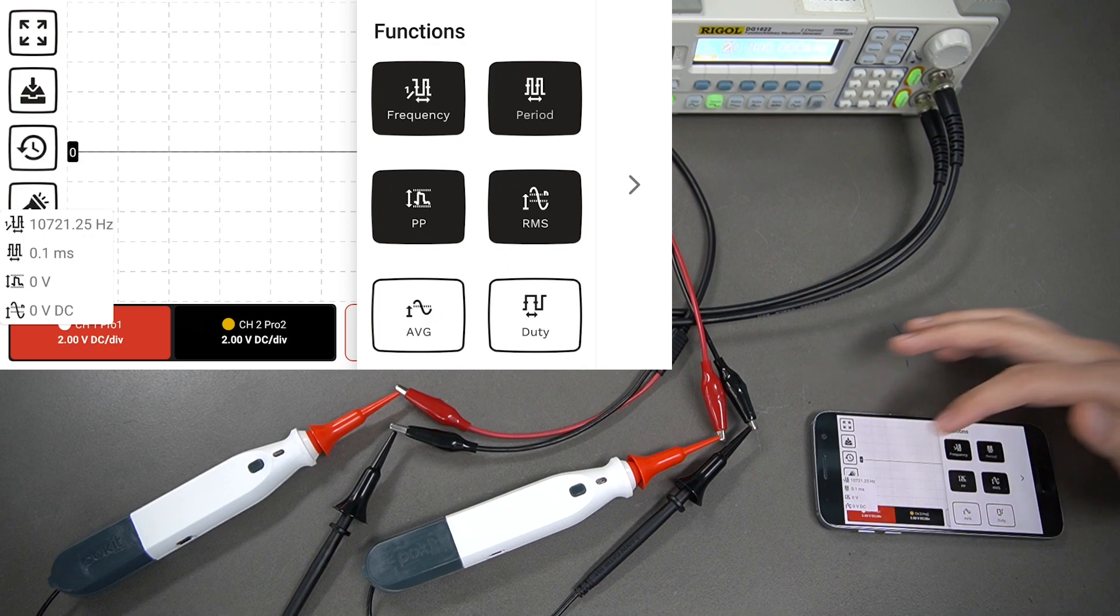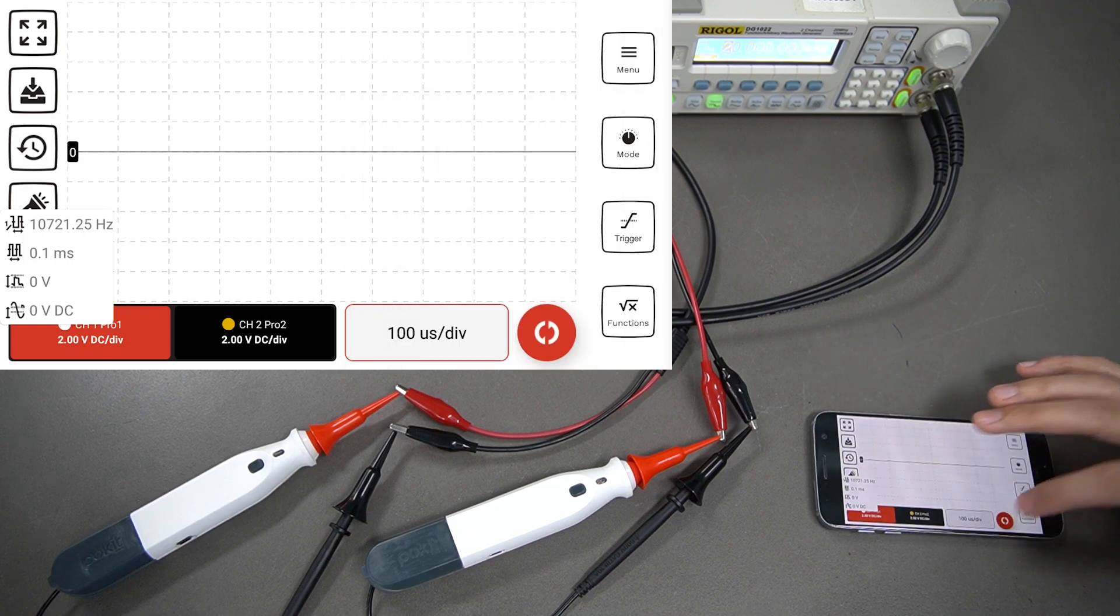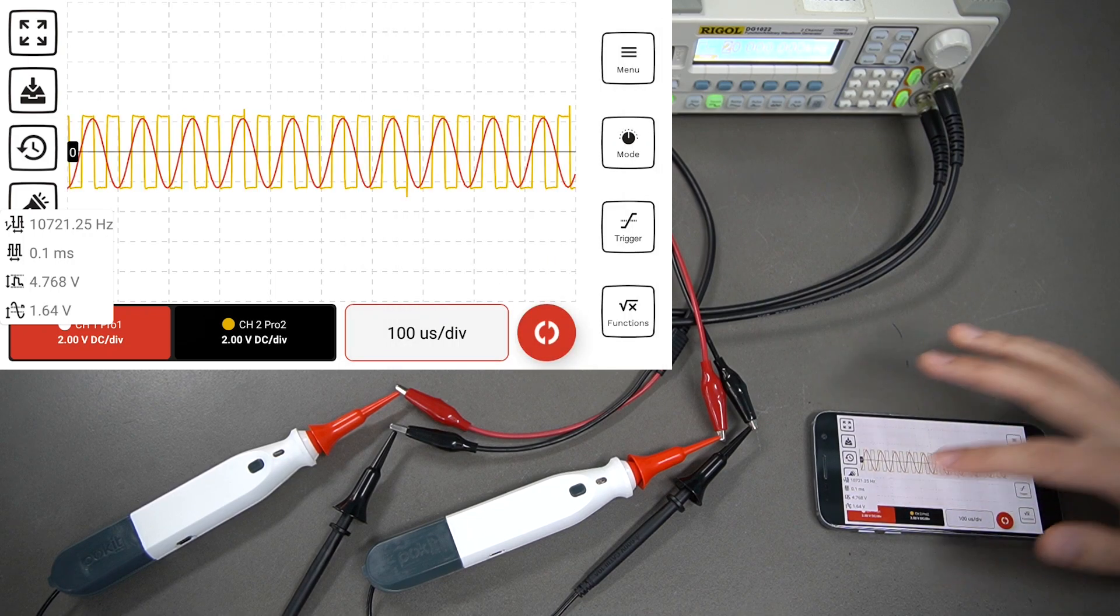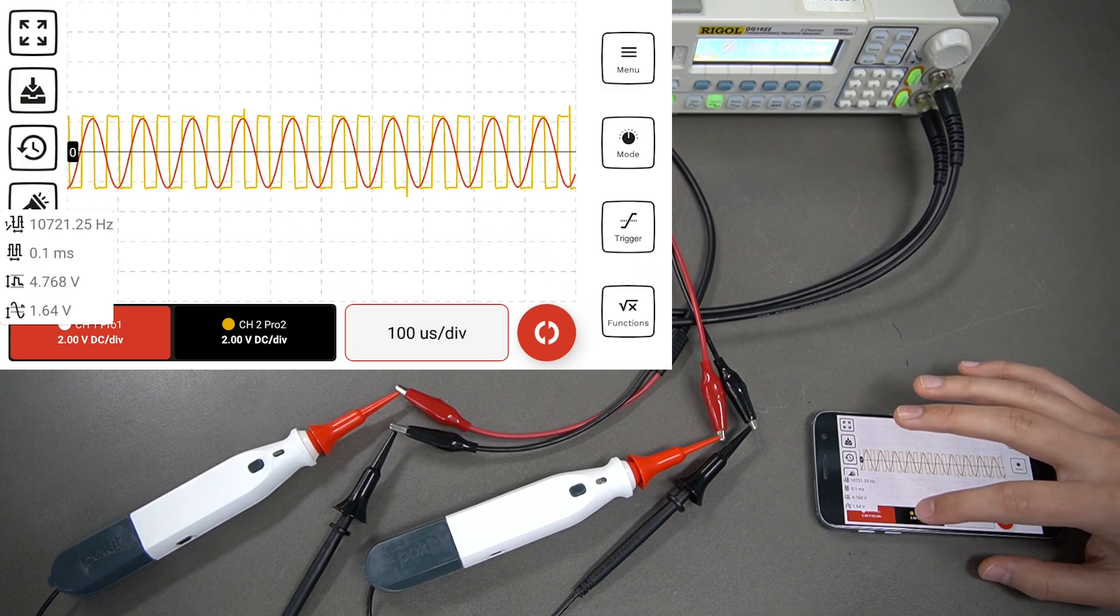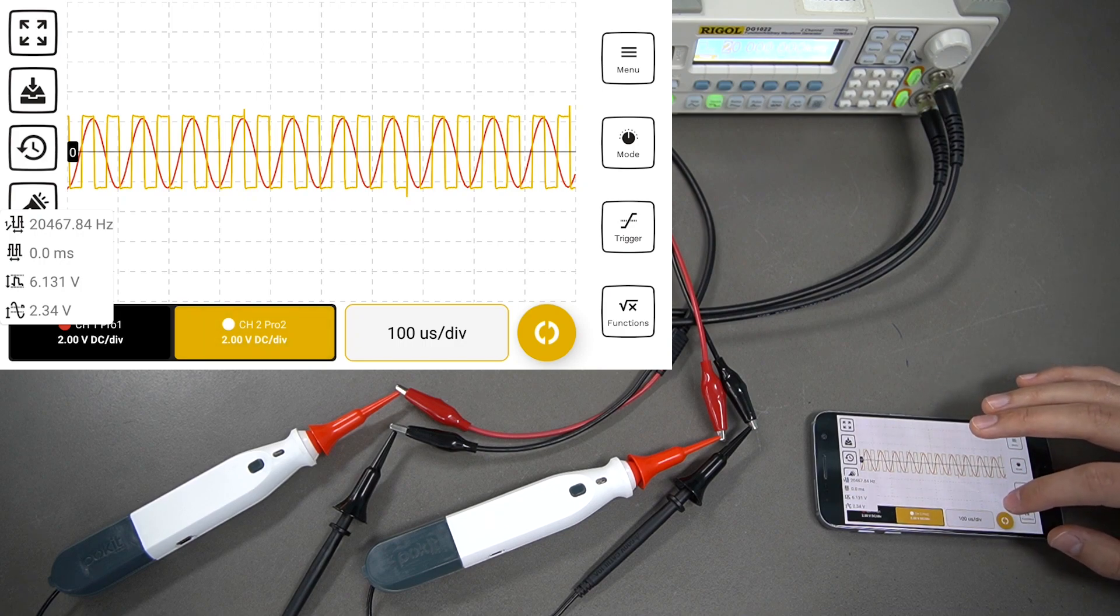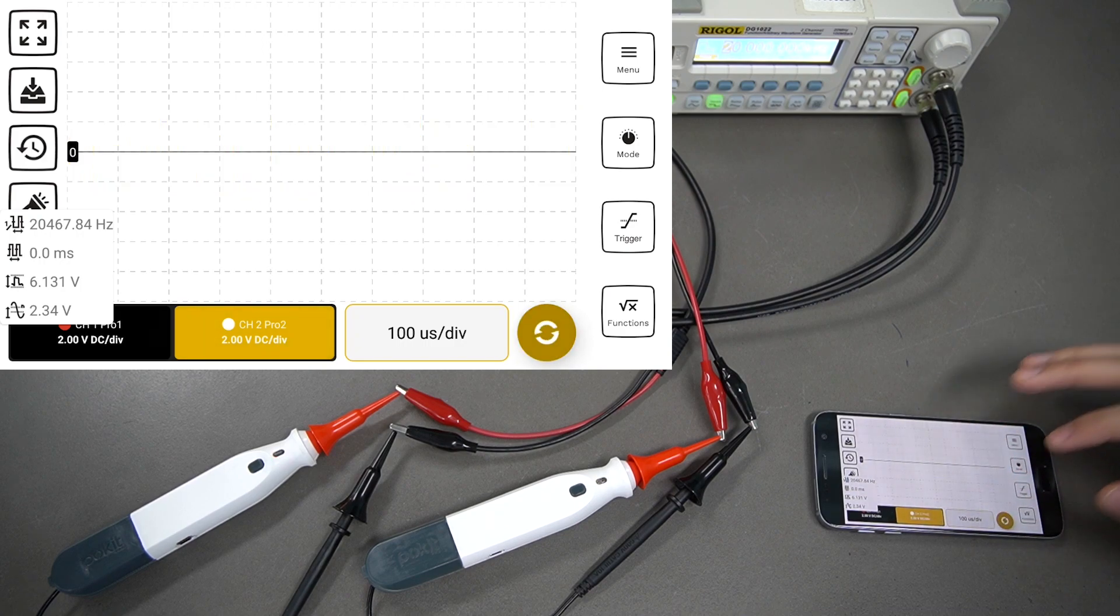You can select up to four of these at any one time, and they'll just show up down the bottom left there. If we take a reading now, you can see we get that information down the bottom there. If we change to the other channel, we also get that as well for that channel.